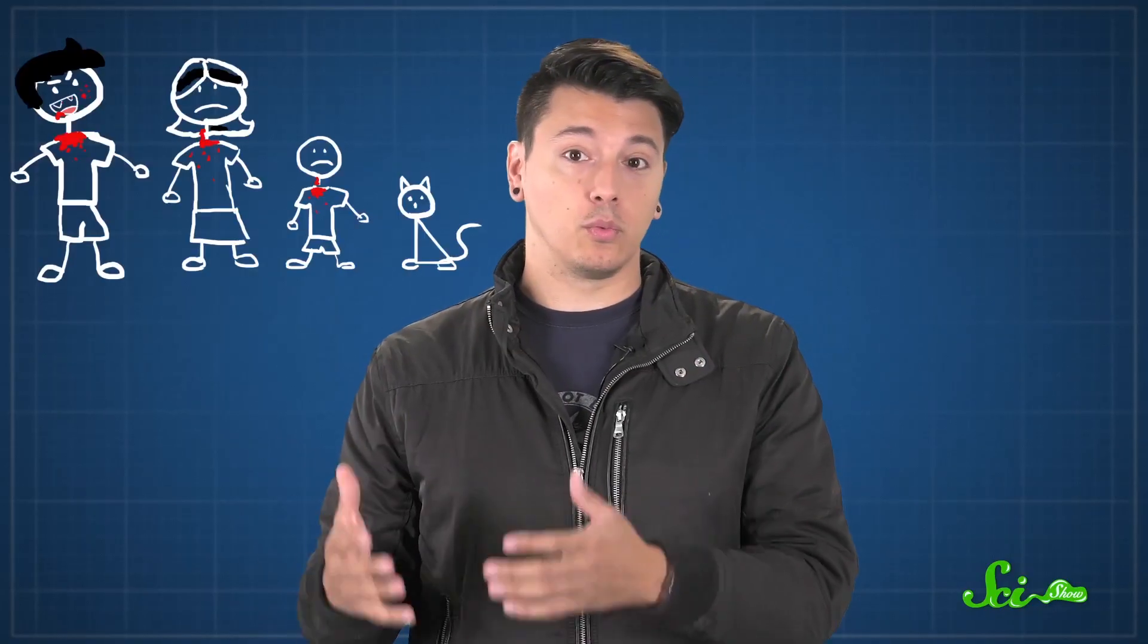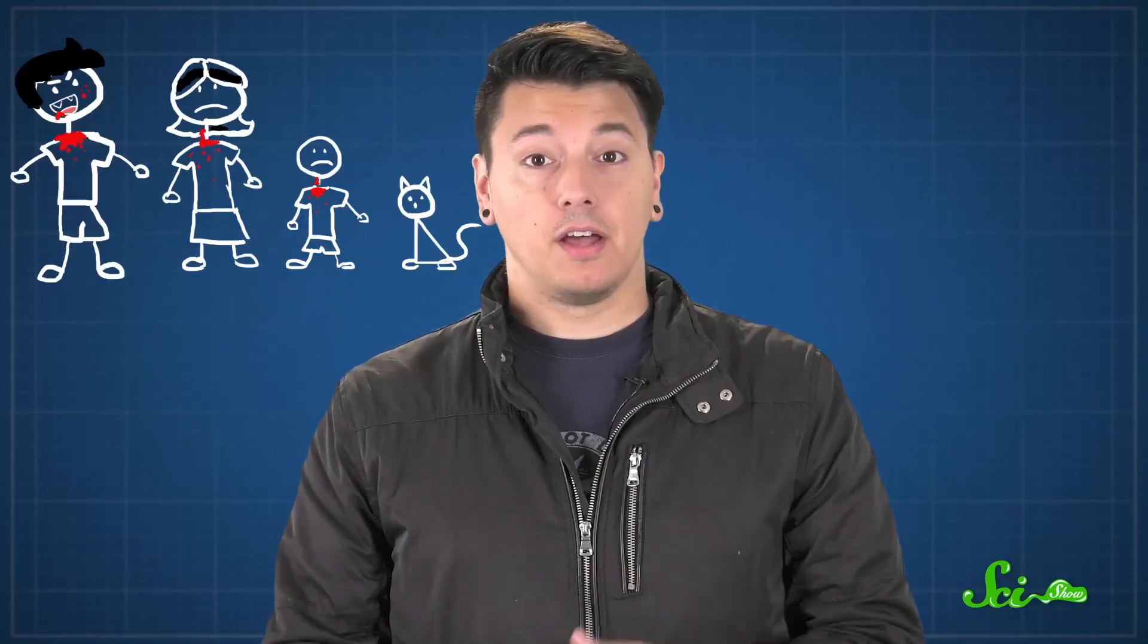Today, porphyria is treatable. But back in the Middle Ages, it wasn't very well understood, so people could have made up all kinds of stories about it. Most kinds of porphyria are also hereditary conditions, so stories could have easily spread about a group of vampires, or one vampire who infected their family.